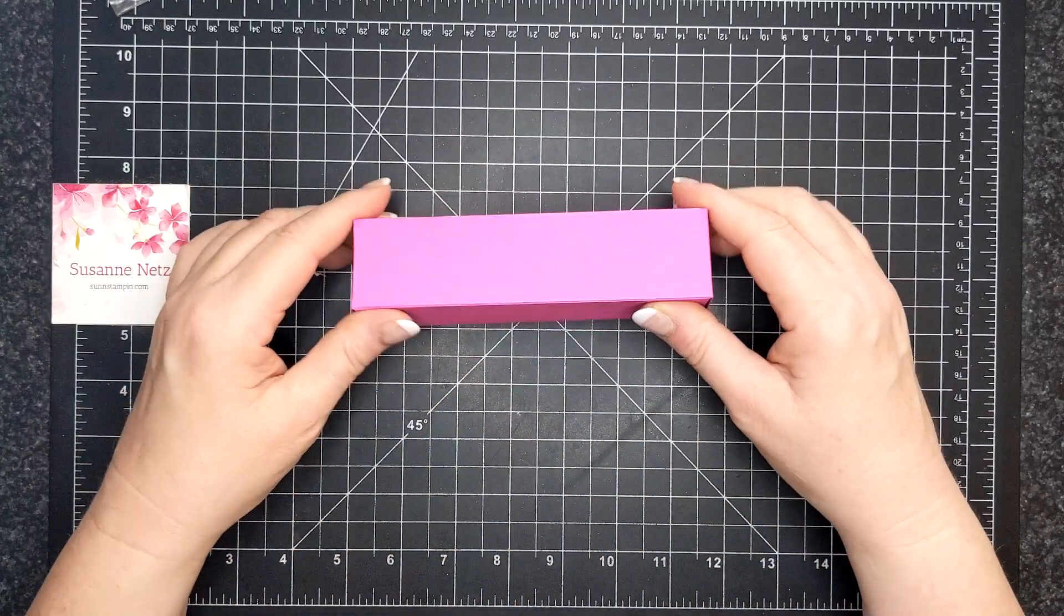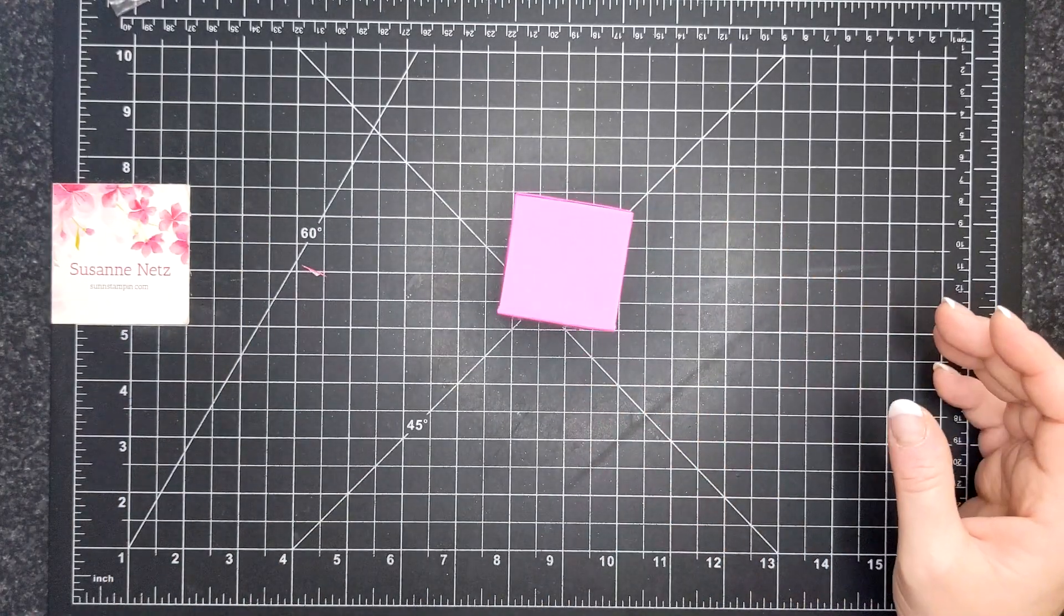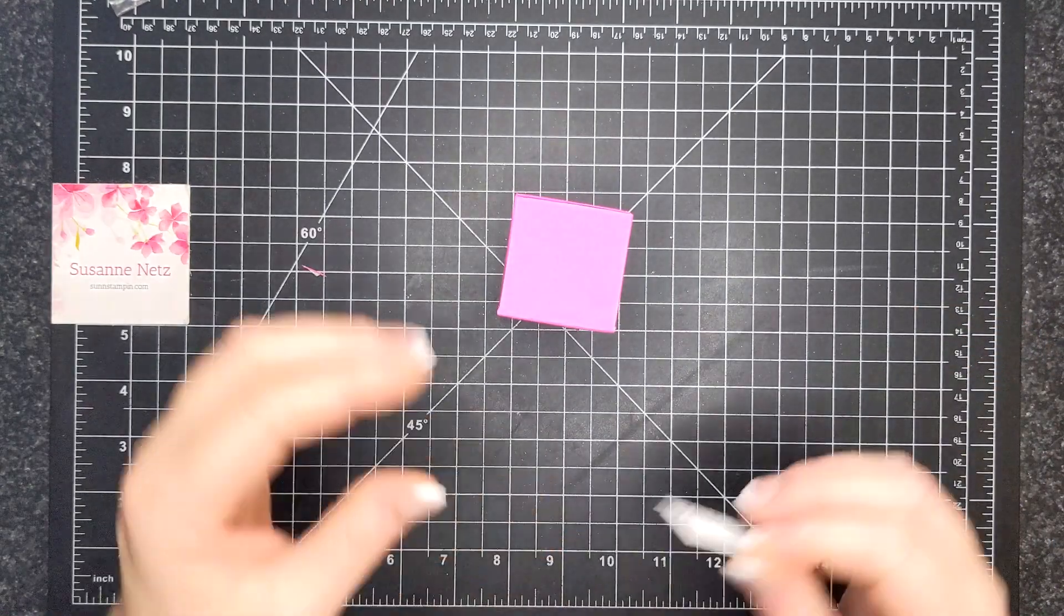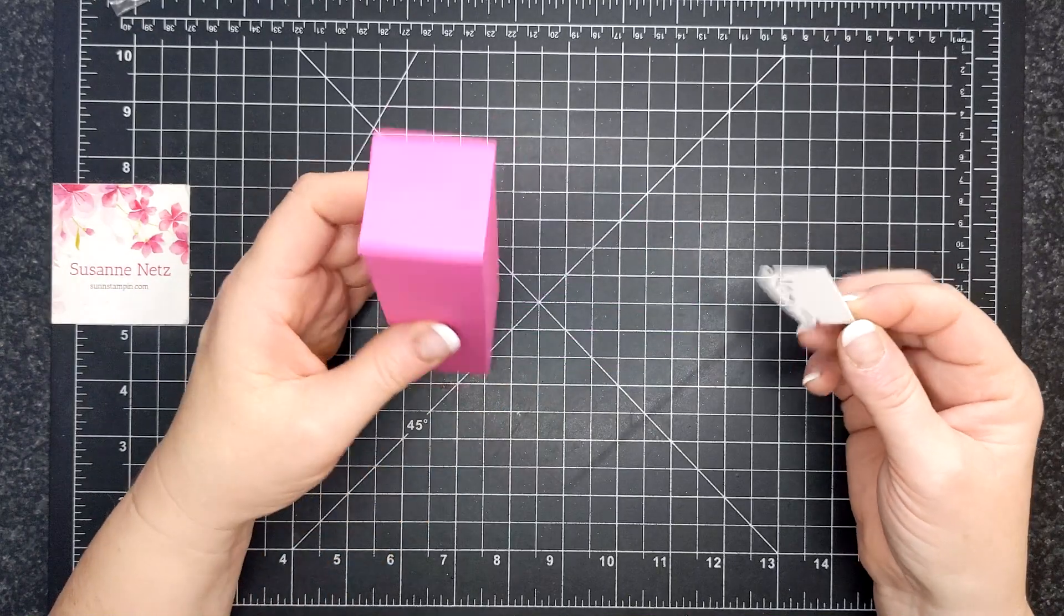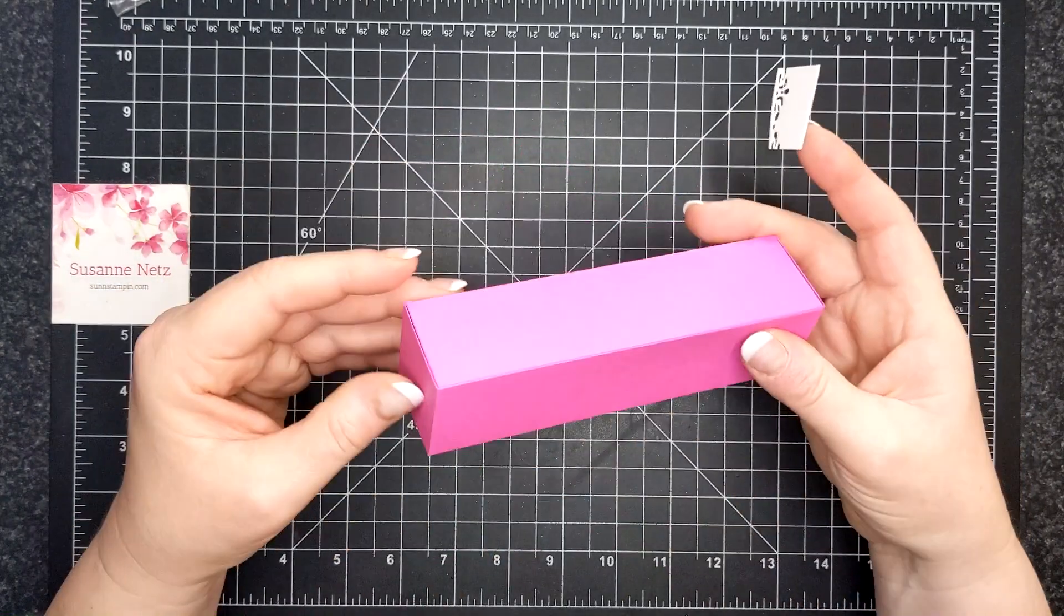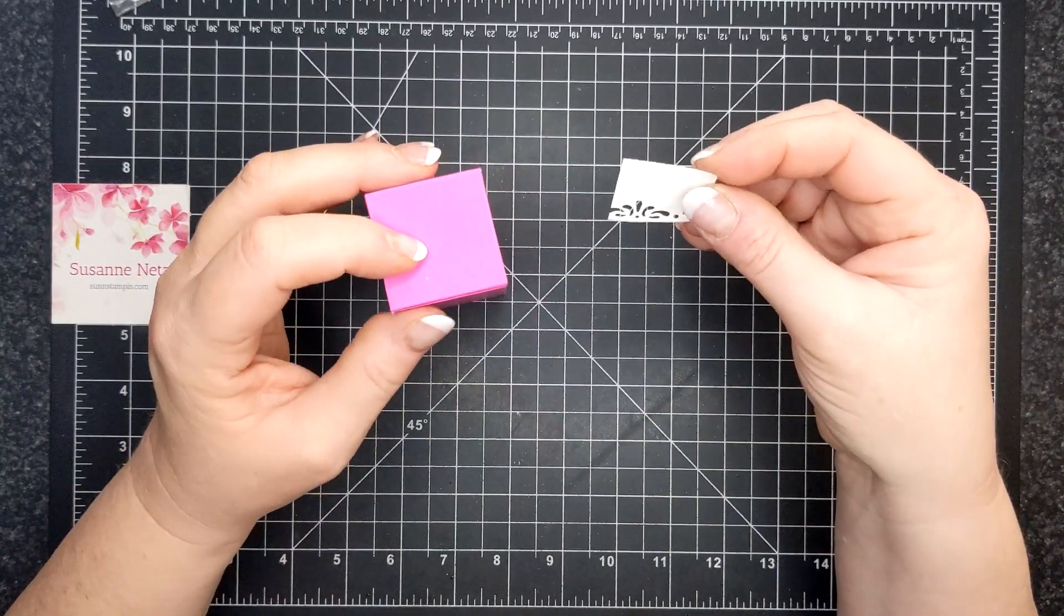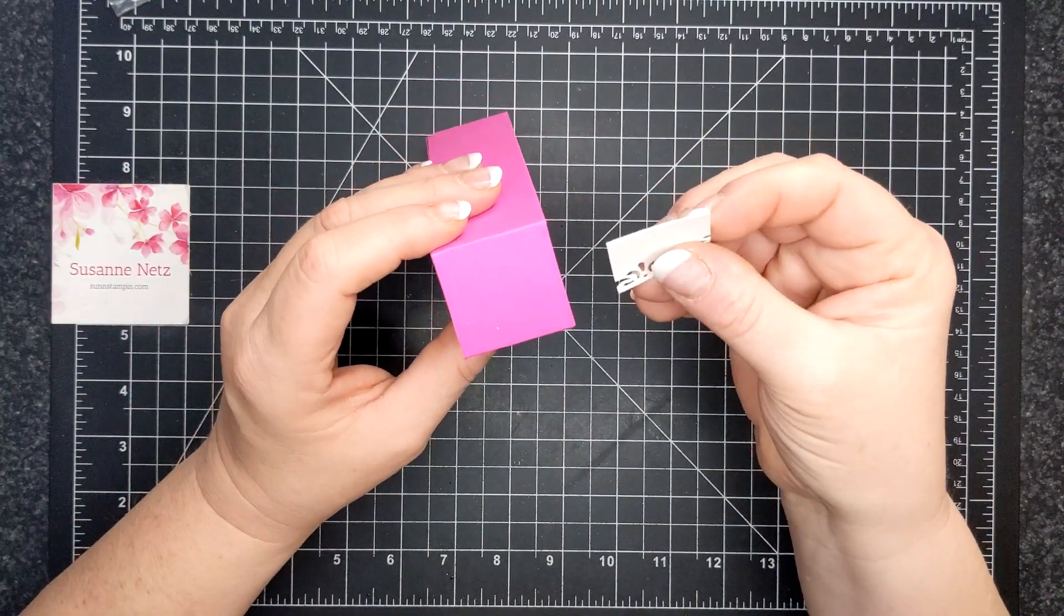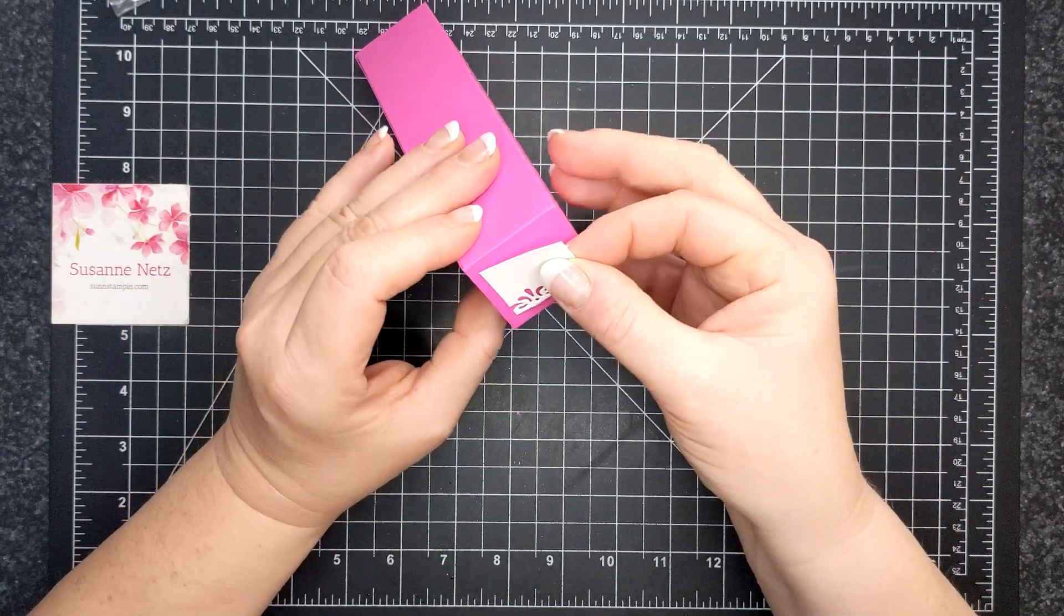All right. I'm happy with that. For a designer series paper, if you wanted to cover the entire box, you're more than welcome to. Let's see which one was the front top there. This is Whisper White thick and I had a square of 1.25 by 1.25.